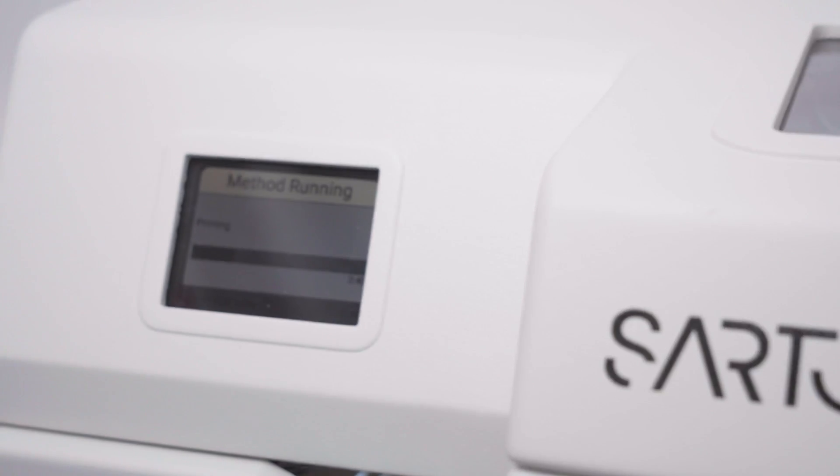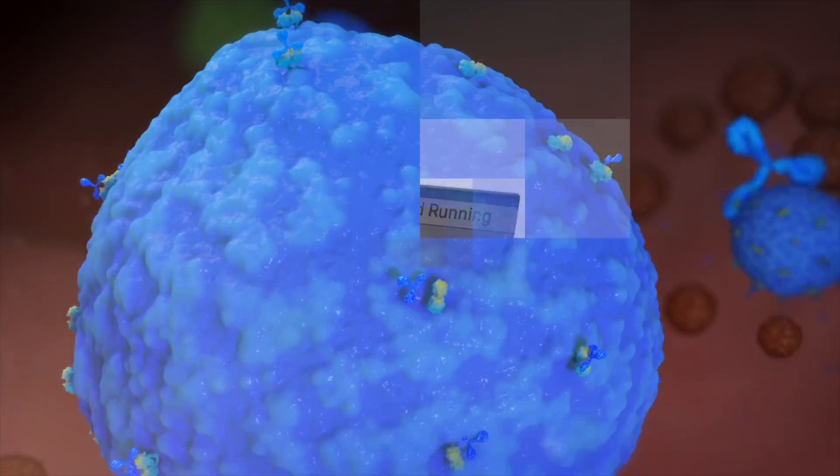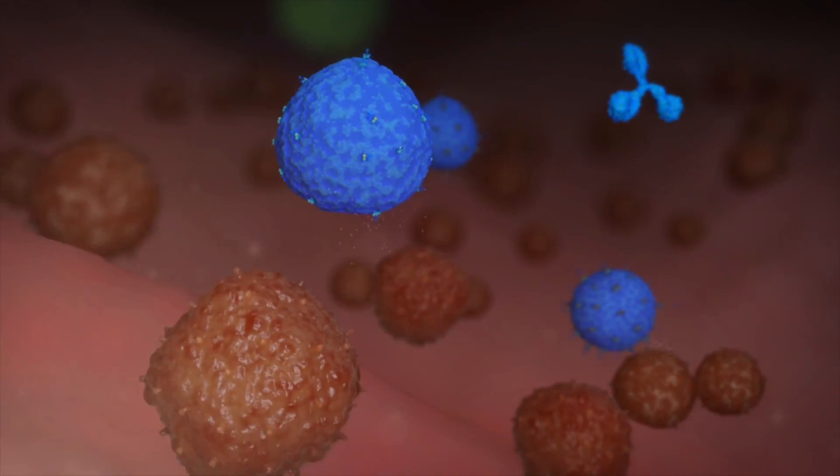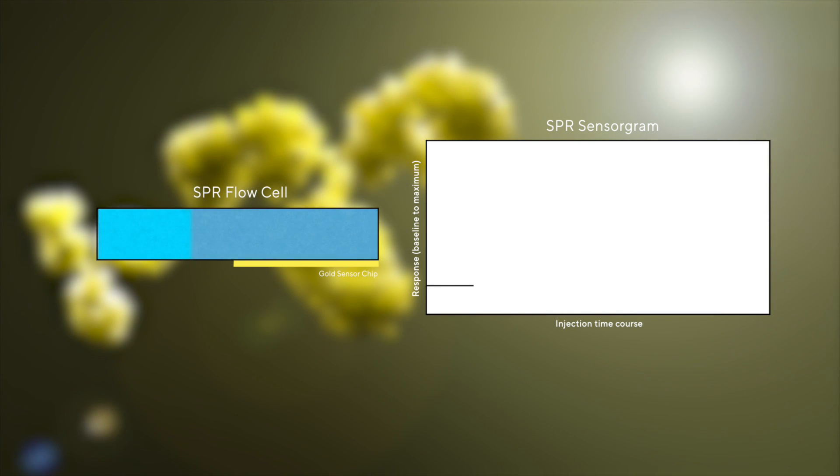After rapidly screening for molecules which warrant further investigation, it's also important to understand their behavior across a range of different conditions. 1-step 2 component gradient injections helps you do this seamlessly.